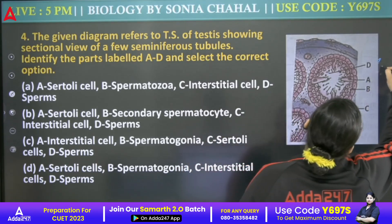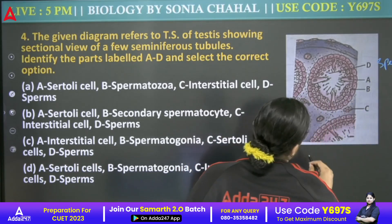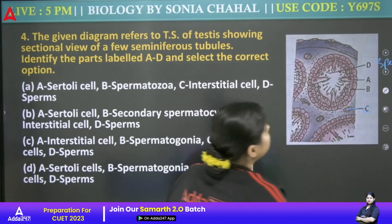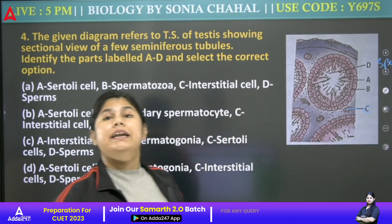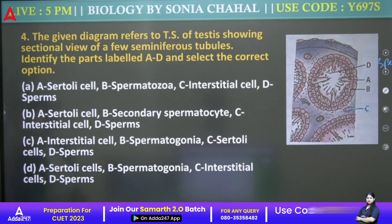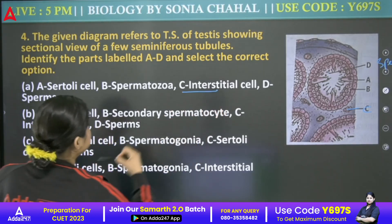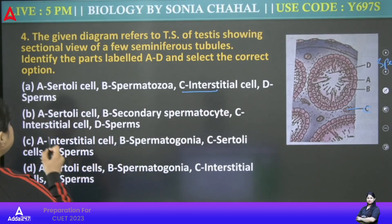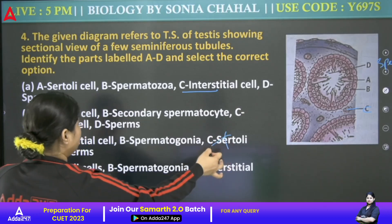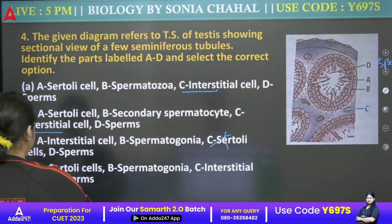We have our sperm here. C is our Leydig cells — we will see here. It has been said that interstitial cells are given. C is our Sertoli cell — C is our Sertoli cell.